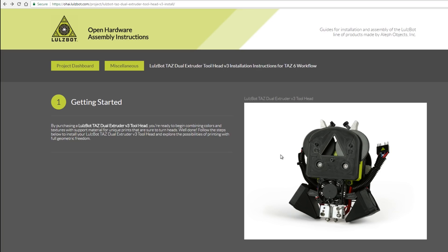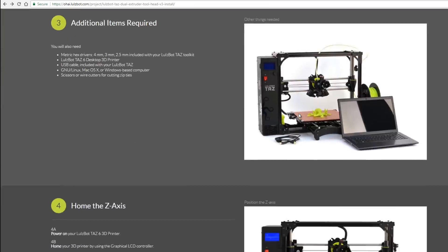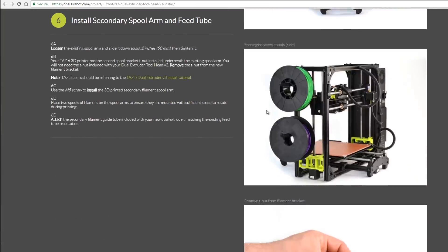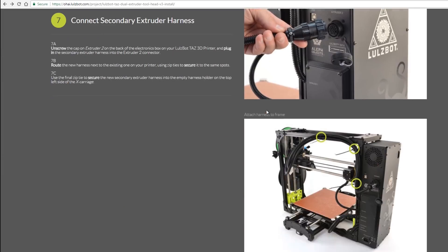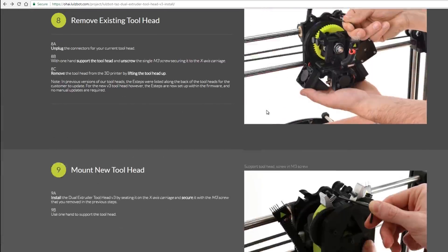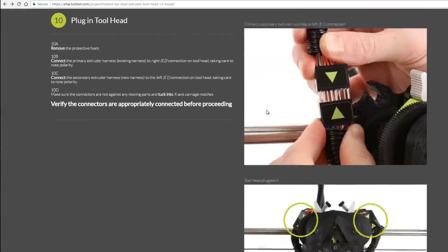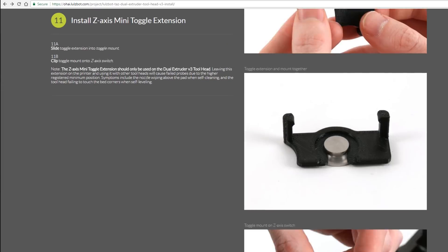Now, Lulzbot have really good instructions on their website. The OHAI Open Hardware Assembly Instructions website has all of the instructions for this, everything that's in the box, and it has basically the full instructions here of how to install it. There's an extra cable and an extra filament guide that comes with it that needs to be installed there, and tells you exactly what to do.